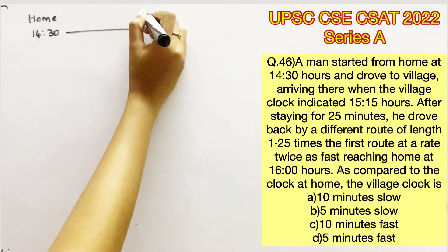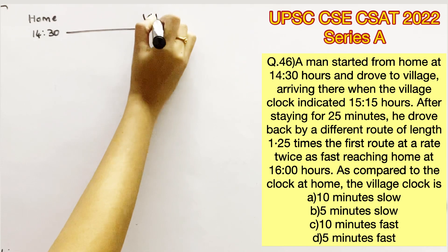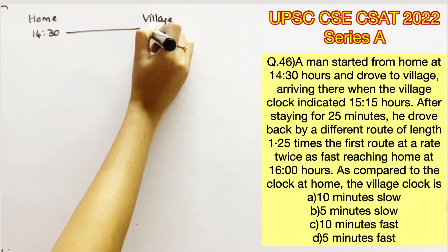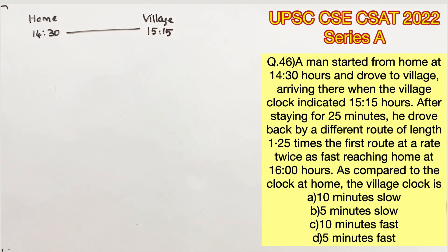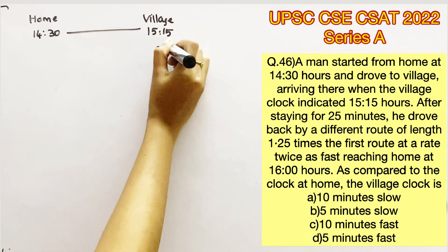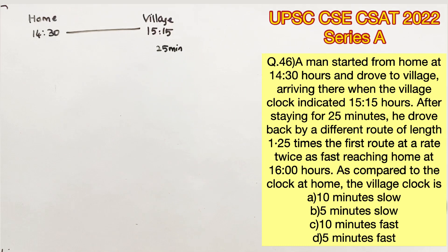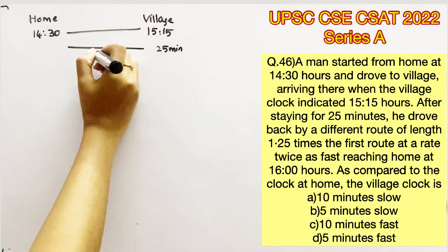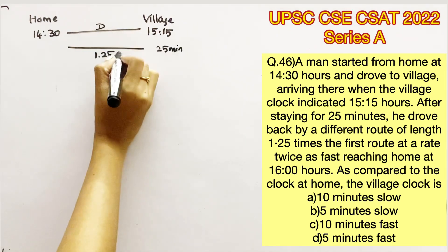He drove to the village, arriving when the clock indicated 15:15 hours. Note that there are two different clocks: the home clock indicates 14:30 and the village clock indicates 15:15. After staying for 25 minutes, he drove back by a different route of length 1.25 times the first route. Let's say the first route was D, so the return route is 1.25D.